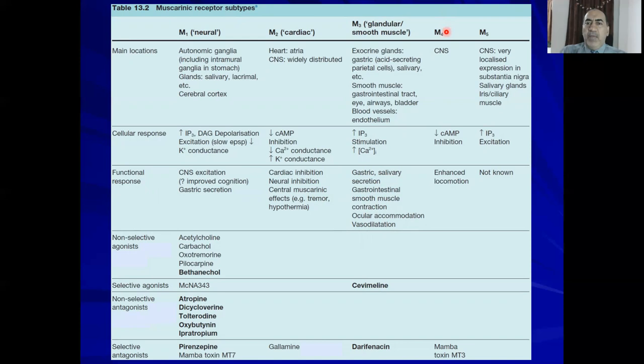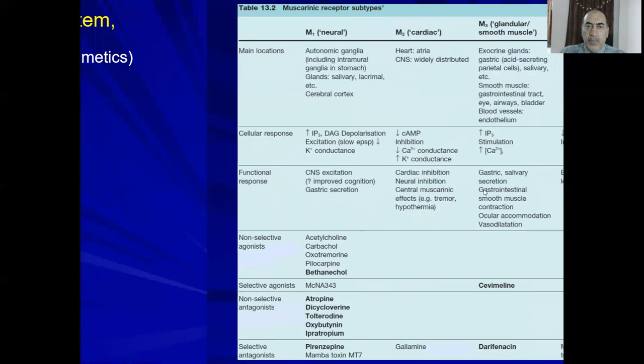M4 and M5 are receptors discovered more recently. Both are expressed in the CNS. M4 is a Gi-PCR, decreasing cyclic AMP; its functional response enhances locomotion, and the selective antagonist is mamba toxin. M5 is a Gq-PCR, increasing inositol trisphosphate; its function is currently unknown.